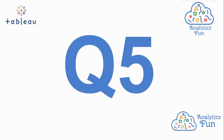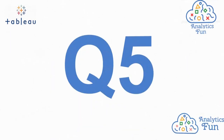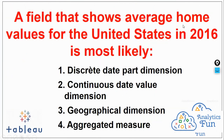Question number 5 is: a field that shows average home values for the United States in 2016 is most likely — and there are 4 options: discrete date part dimension, continuous date value dimension, geographical dimension, and aggregated measure.